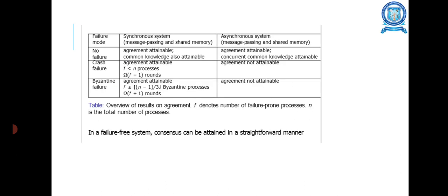Failure mode: Synchronized system Message passing and shared memory. For the failure mode, asynchronous system message passing as well as shared memory. The above table represents the overview of the result on agreement, where F denotes the number of failure-prone processes and N is the total number of processes. In a failure-free system, consensus can be attained in a straightforward manner.